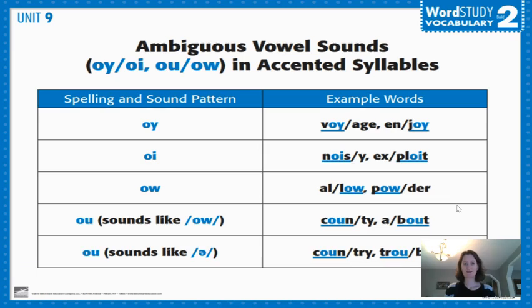Hi fourth graders. For our word study unit 9 this week we are talking about ambiguous vowel sounds in accented syllables. Here you can see in blue we have some of the spelling patterns for the ambiguous vowel sounds that we are going to be talking about this week.